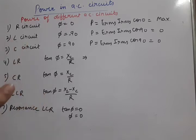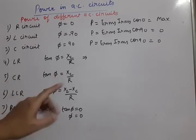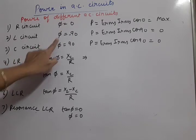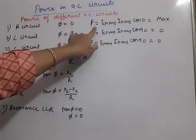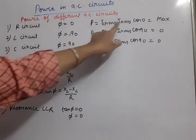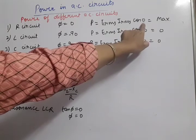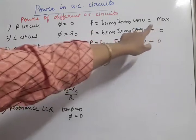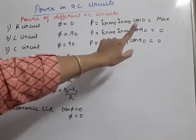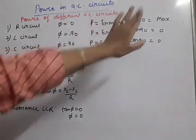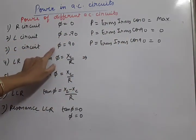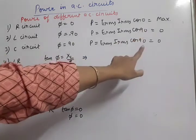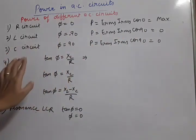For the R-only circuit, φ = 0, so cos 0 = 1, meaning power is maximum. This cos φ term is called the power factor, which equals 1 here. For L-only and C-only circuits, φ = ±90°. cos(±90°) = 0, so power is zero in L and C circuits.